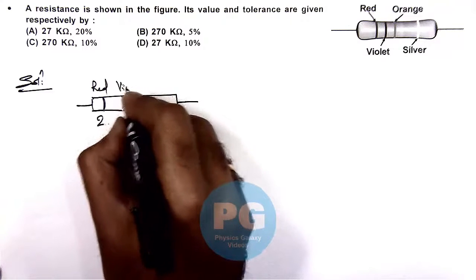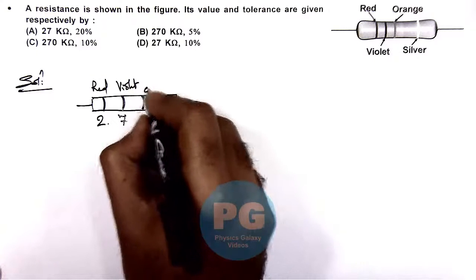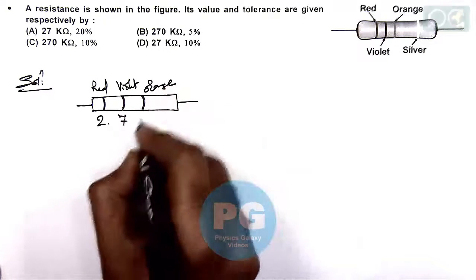The second one is violet for which the code is 7. The third is orange, for orange color code is 3.